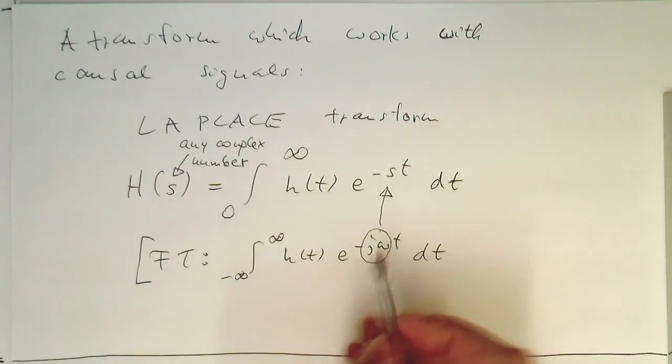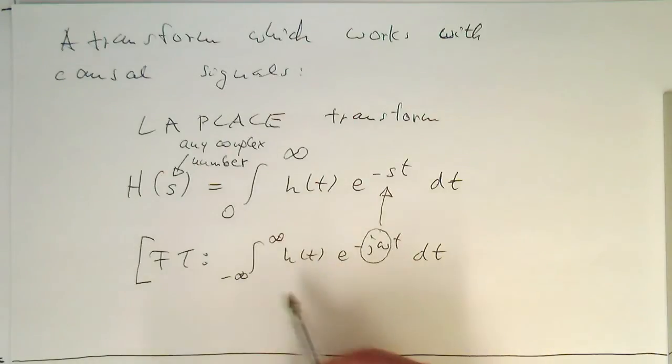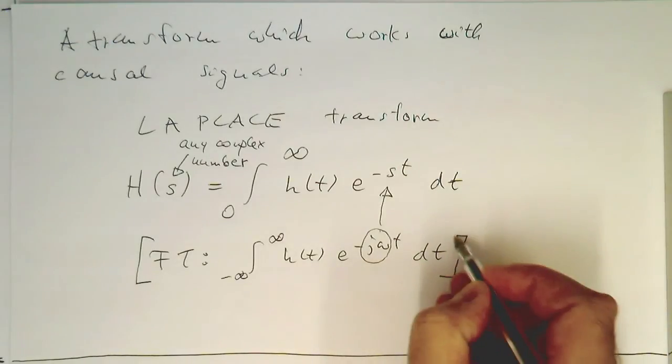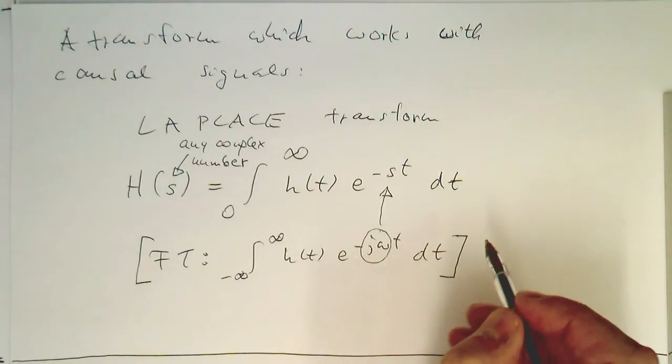Whereas here we have j omega. We directly see that if we substitute j omega for s, we get something like a Fourier transform back. So the Laplace transform is like a generalized Fourier transform.